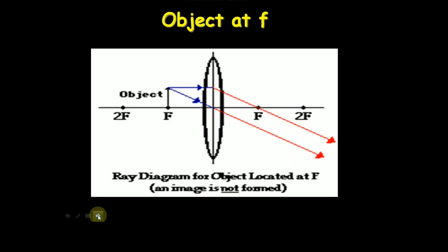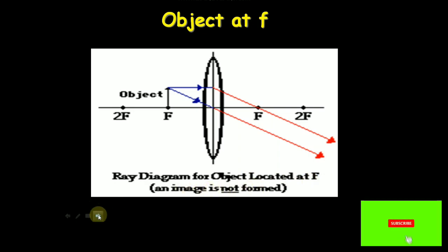Object at f. There is a ray diagram for object located at f and image at infinity is not formed.